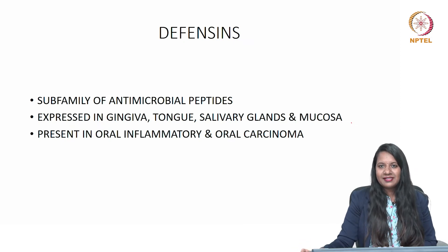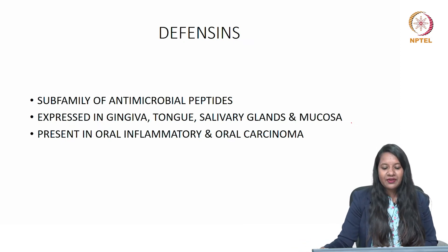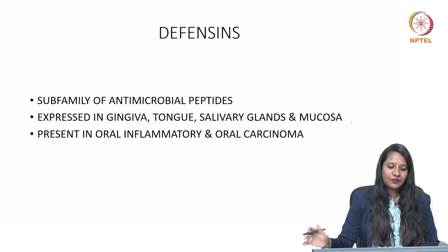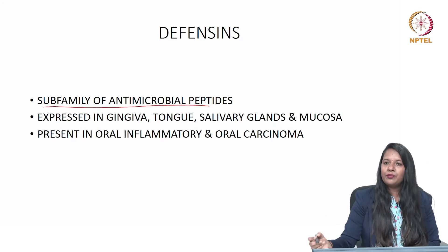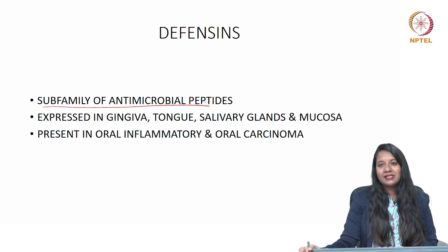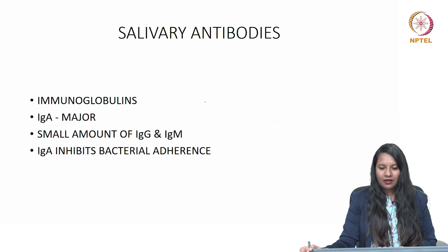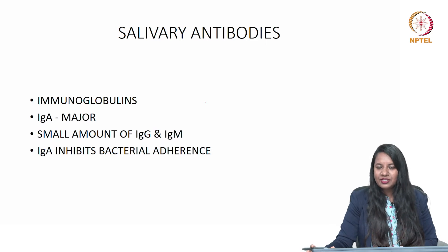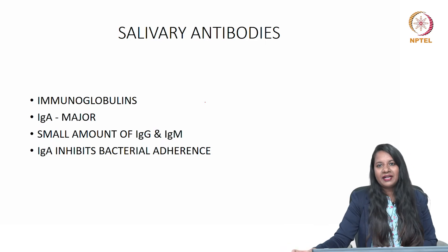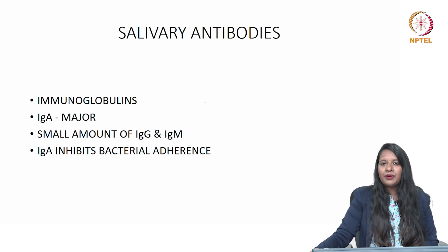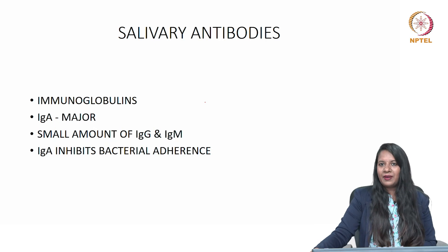Then comes defensins, recently found in gingiva, tongue, salivary glands, and mucosa — a subfamily of antimicrobial peptides. They are also present in oral inflammatory conditions and in oral carcinoma. Salivary antibodies are nothing but immunoglobulins. IgA is the most important salivary immunoglobulin, which inhibits bacterial adherence. The others — IgG and IgM — along with peroxidases, both have enhanced antibacterial activity.